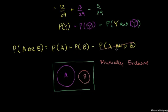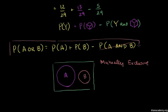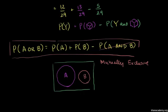So when events are mutually exclusive, the formula simplifies: the probability of A or B equals the probability of A plus the probability of B.